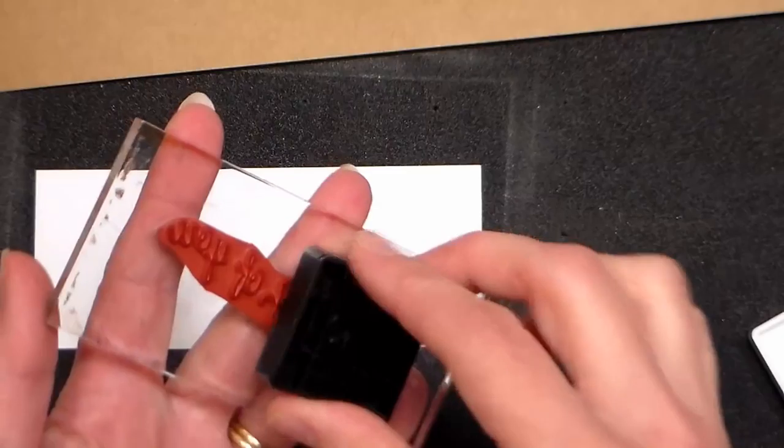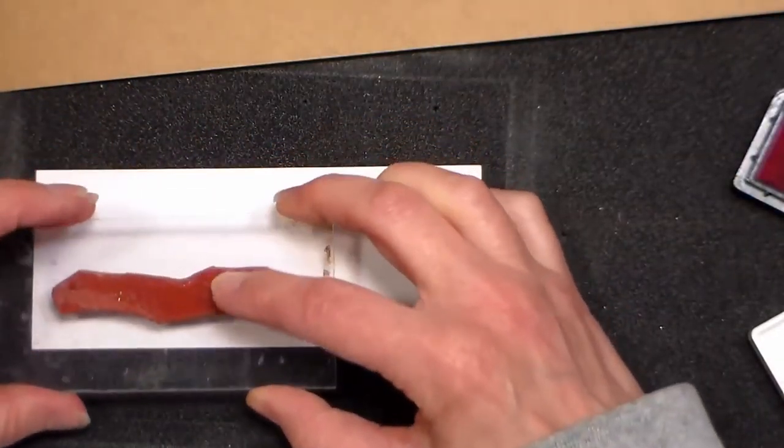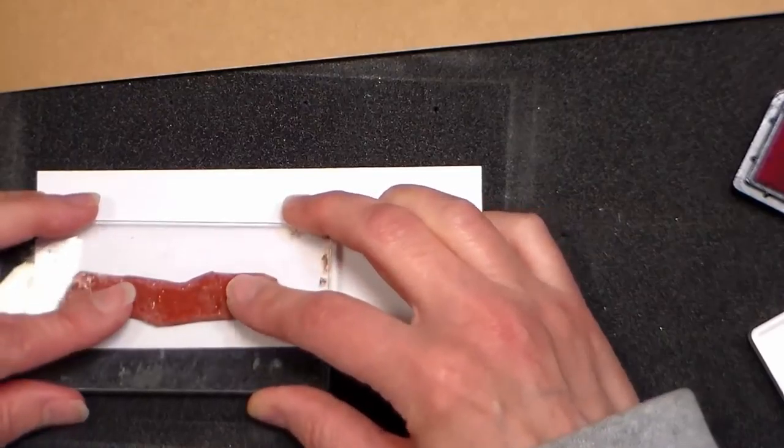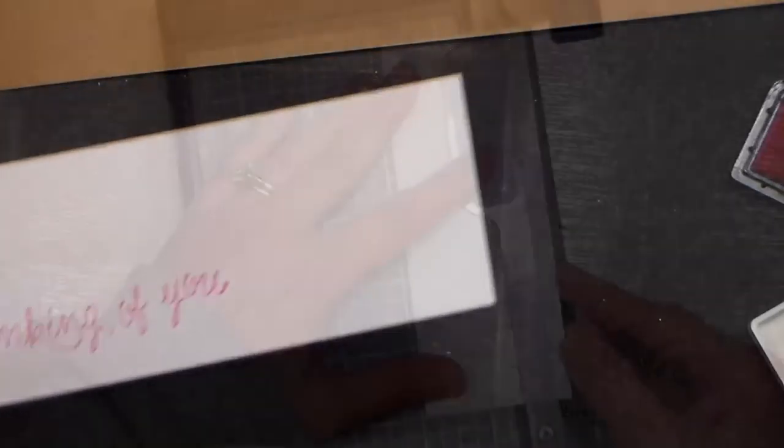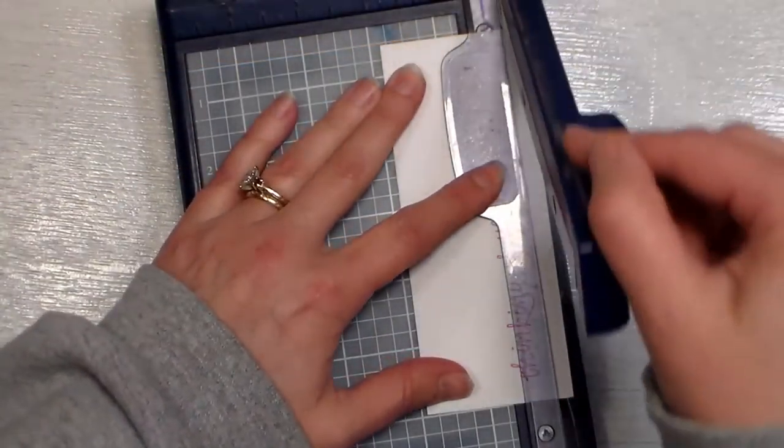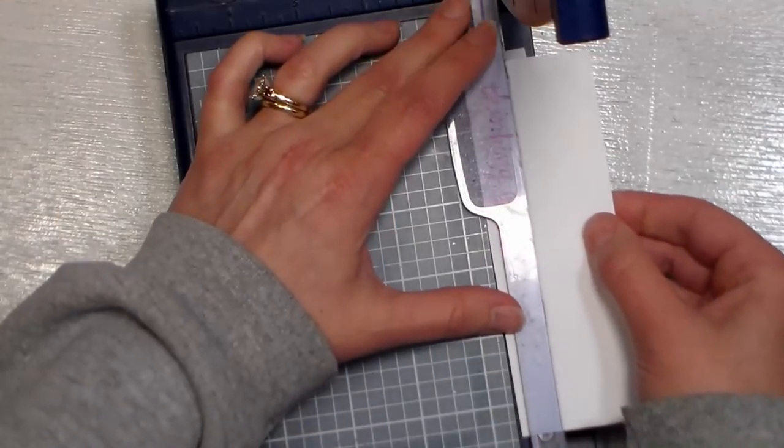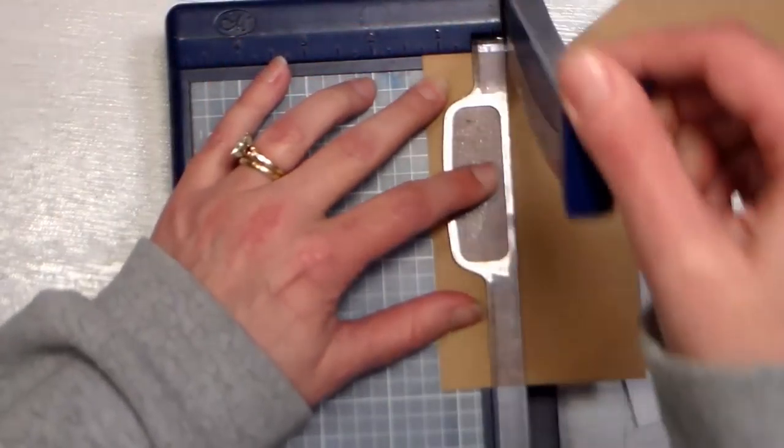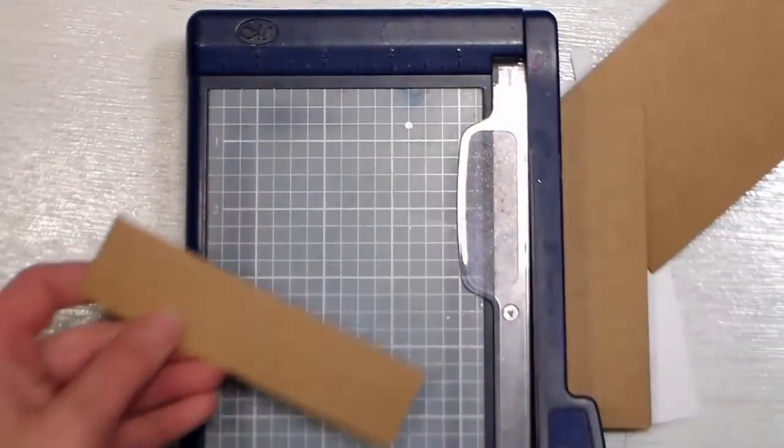Now I'm using an unmounted stamp from another one of the sets from Rubber Stamp Tapestry, and this says 'Thinking of You.' I'm stamping it on a leftover piece of white cardstock from the main panel that I made, and then I'm simply going to trim it down so that it's not too big. I just want the most narrow strip I can get without the letters looking too crowded, and then I'm going to cut a slightly larger one out of craft so I can mat it.